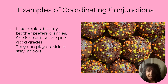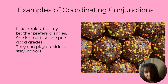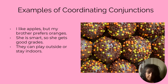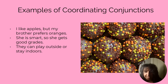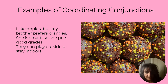Here's a last example: 'They can play outside or stay indoors.' With that one it's a little bit more tricky — you would have to write 'They can play outside. They can stay indoors.' But again, in order to get a little more flow to the sentence, you would remove some words and connect them together with the word 'or,' which is one of the coordinating conjunctions.